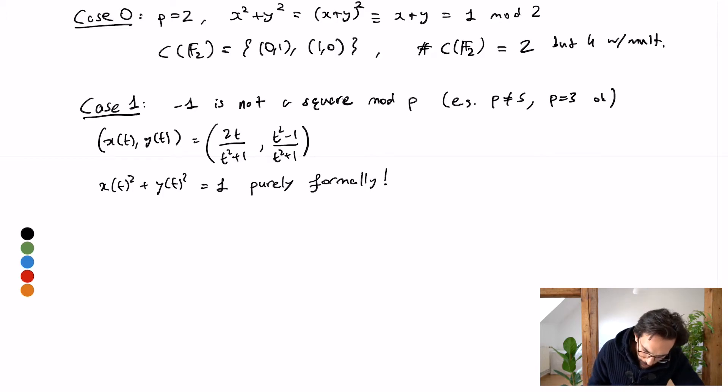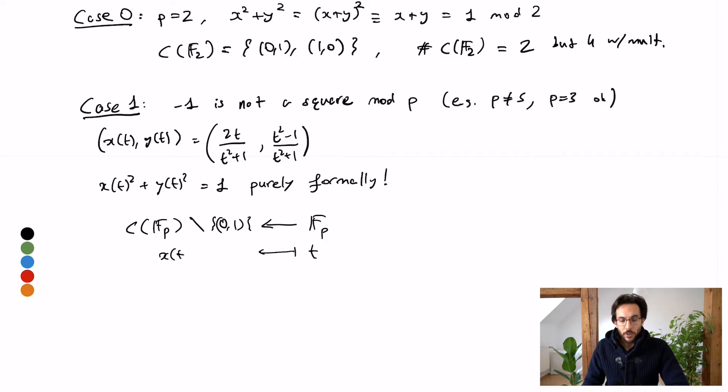So this now gives me a map from F_p to C of F_p minus the north pole. And here I take t to x(t), y(t). So these points will satisfy my polynomial equation.